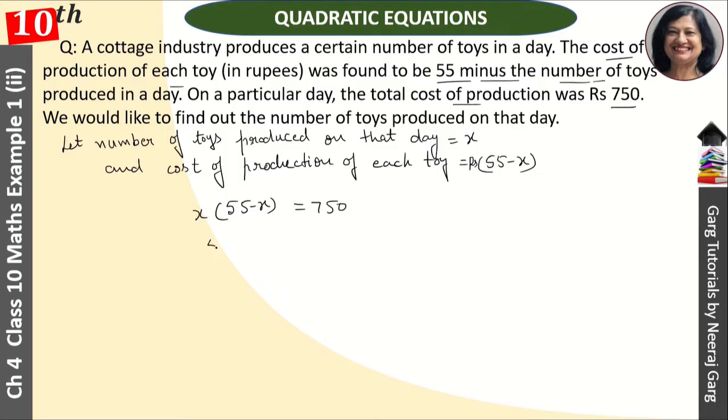So 55x minus x squared and 750 is equal to 0. This is equal to Ax squared plus Bx plus C form.